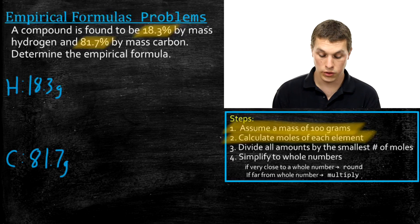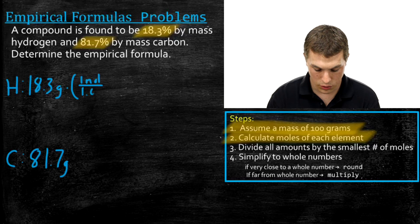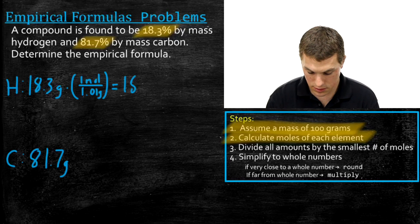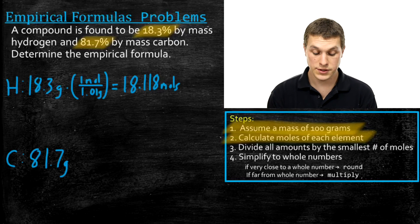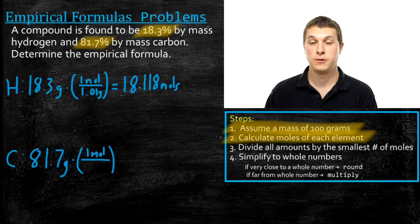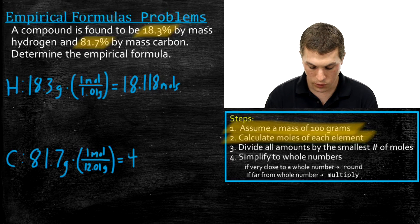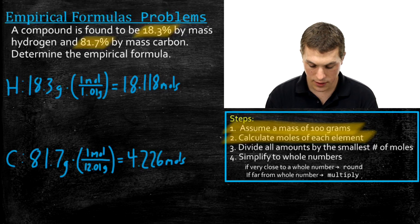To convert to moles, we divide each mass by its molar mass from the periodic table. For hydrogen: 18.3 grams divided by 1.01 grams per mole gives 18.118 moles — keep that full number in your calculator. For carbon: 81.7 grams divided by 12.01 grams per mole gives 4.226 moles. We convert to moles because we care about the number of atoms of carbon and hydrogen, not their mass.